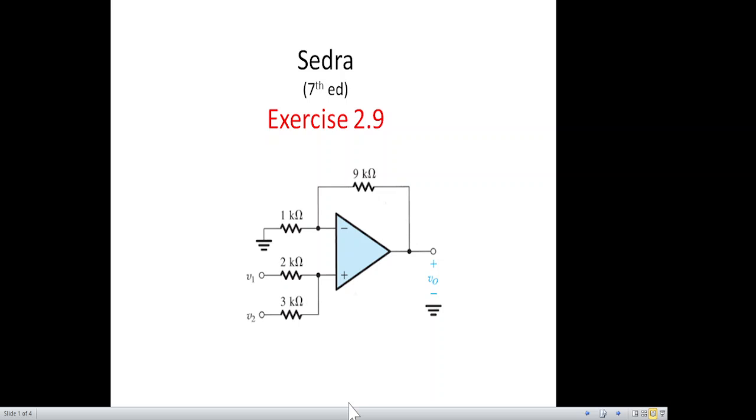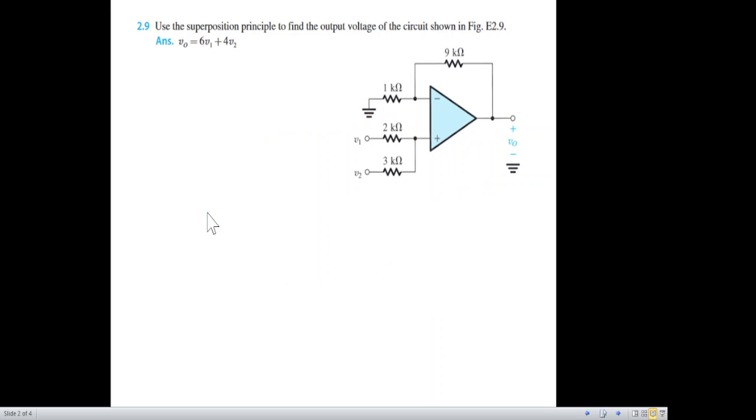This video is from Mr. Sadra's book, 7th edition, exercise 2.9, related to operational amplifiers. The question says use the superposition principle to find the output voltage of the circuit shown in the figure. So this is the circuit.